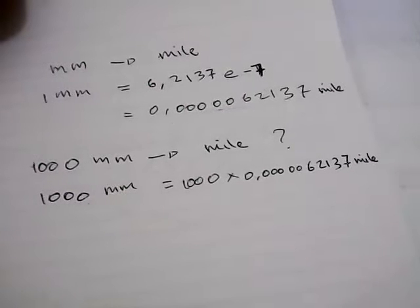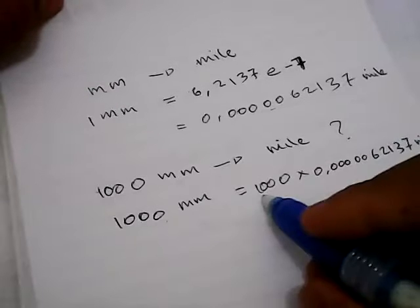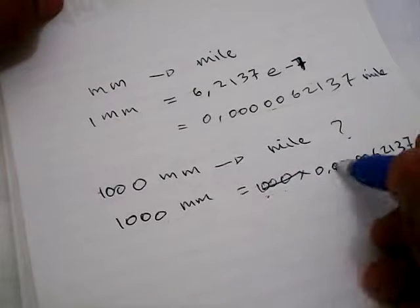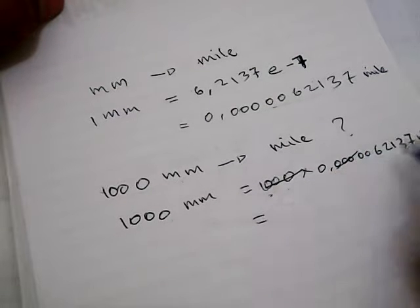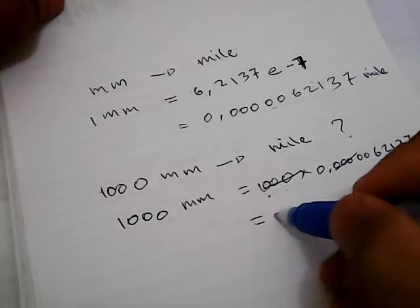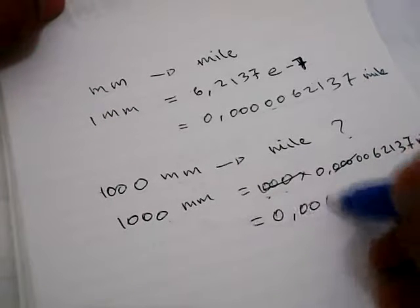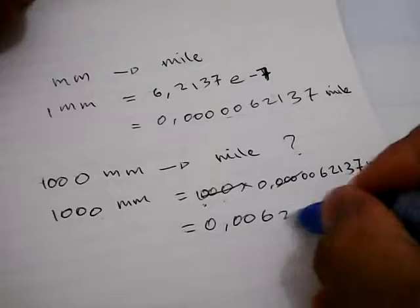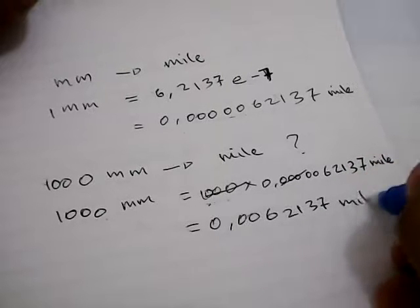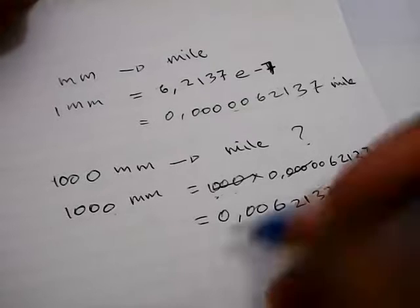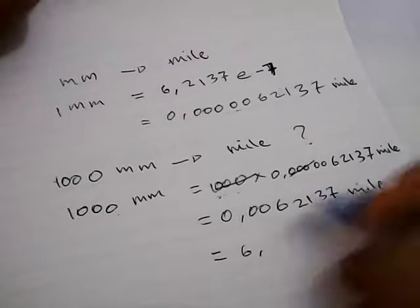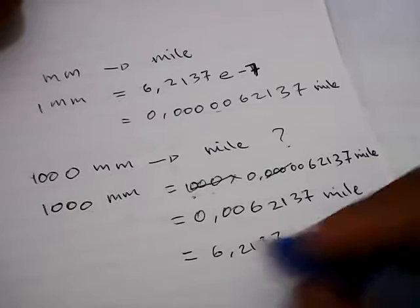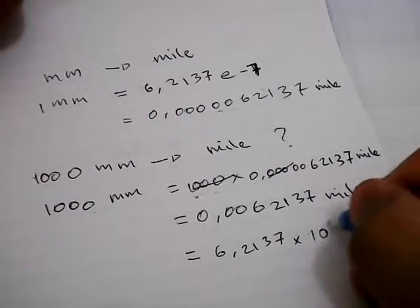It's quite a really long number. Because we have this 3 and 0, we just need to erase this 0. The result is 0.0062137 miles. Or, in another way, you can write it as 6.2137 multiplied with 10 to the power of minus 3.